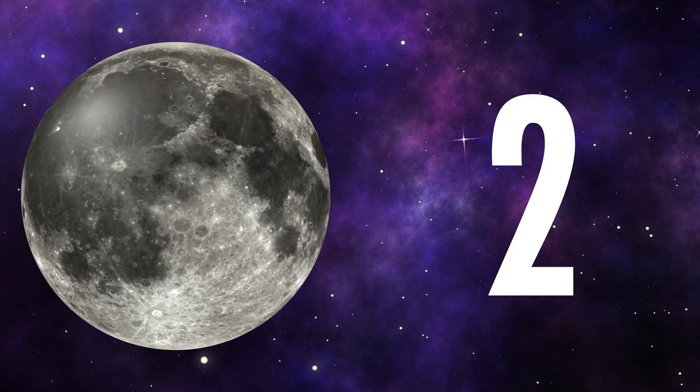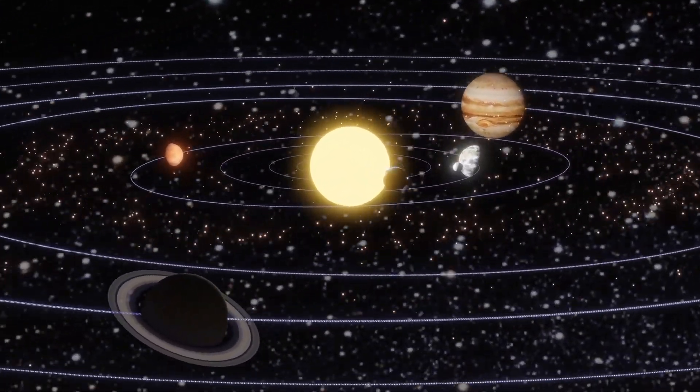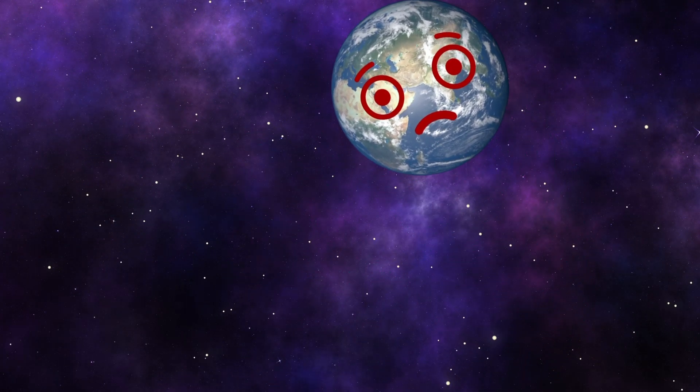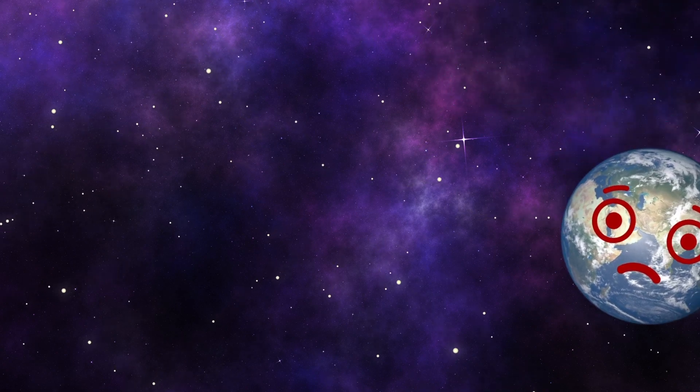Fact number two, the moon keeps our Earth steady on its axis. Imagine if the Earth wobbled like a spinning top. We'd have extreme seasons, making it difficult for life to thrive. Thanks to the moon, we have stable seasons.